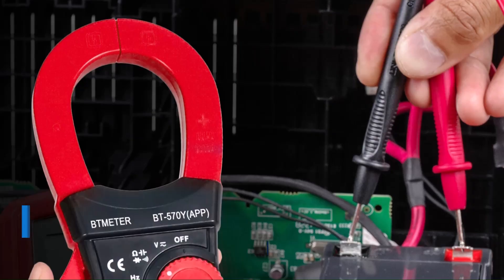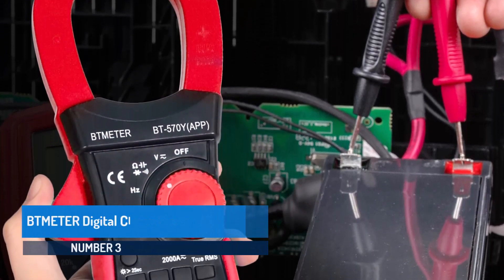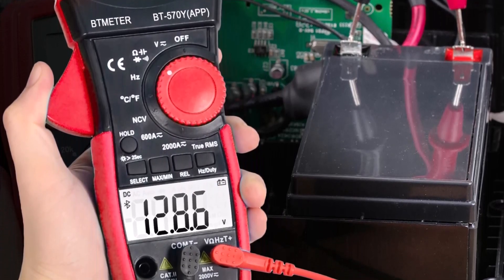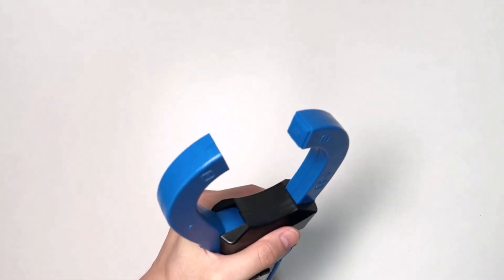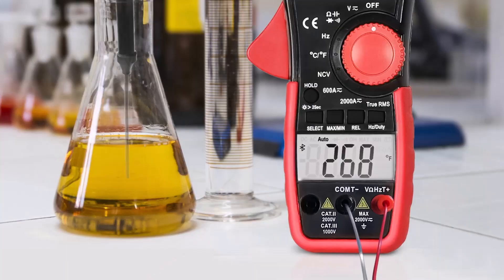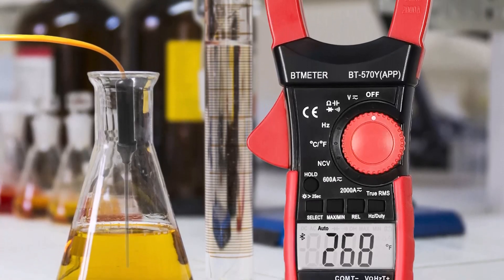Number 3. BT Meter Digital Clamp Meter. The BT Meter Digital Clamp Meter BT570YAPP is designed to deliver accurate and reliable electrical measurements in a compact and user-friendly form. Certified with CE and manufactured under strict quality standards, this meter is suitable for both DIY enthusiasts and professional electricians.